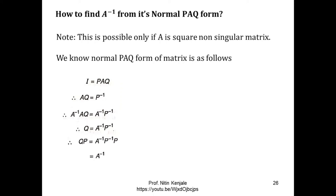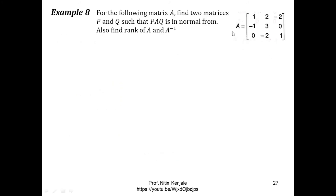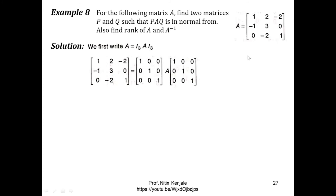So Q into P gives us the inverse of matrix A. Let us see an example. We are given matrix A of order 3 cross 3, and we are asked to find the PAQ form for this matrix, as well as the rank of A and A inverse. Since this matrix is of order 3 cross 3, we write it as A equals I3·A·I3. Now we perform a series of row and column transformations on the LHS matrix A to reduce it to normal form. Similar row transformations are performed on the first matrix and similar column transformations on the third matrix on the RHS.